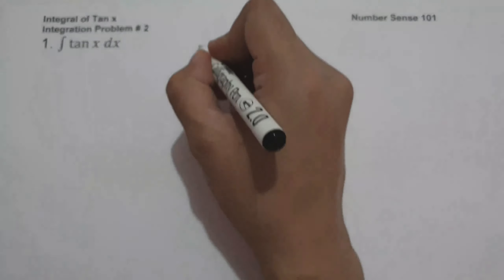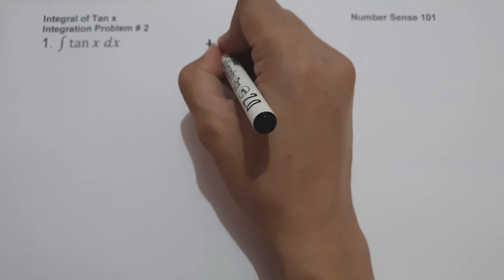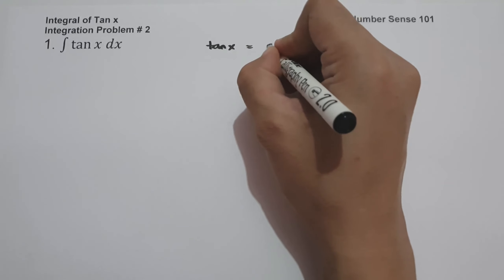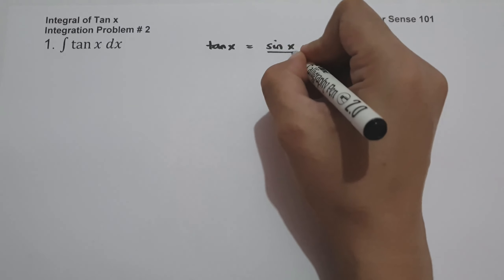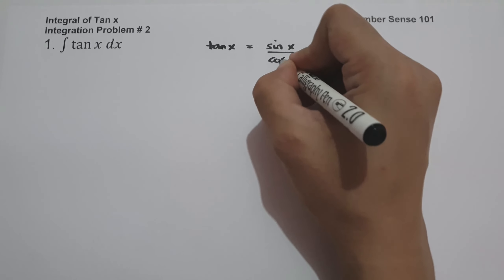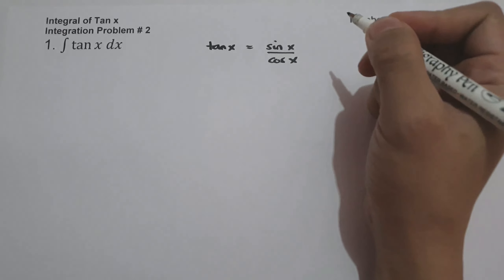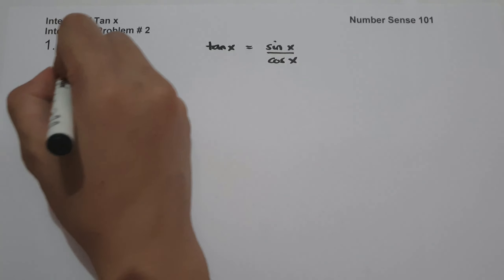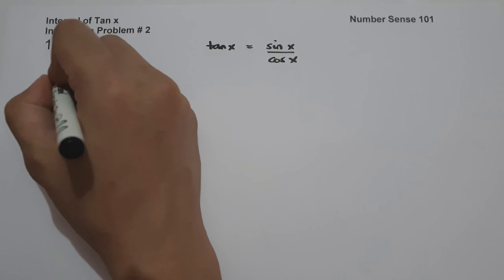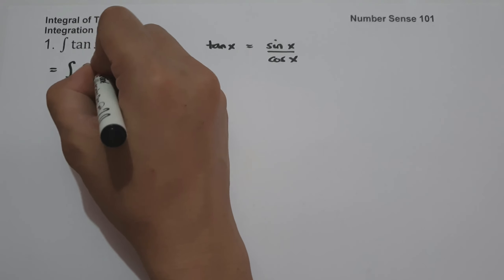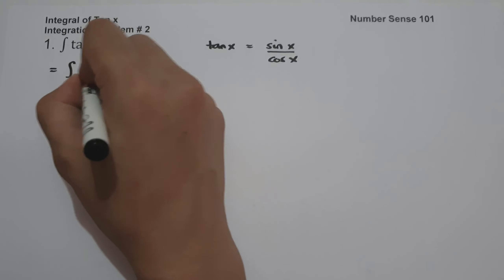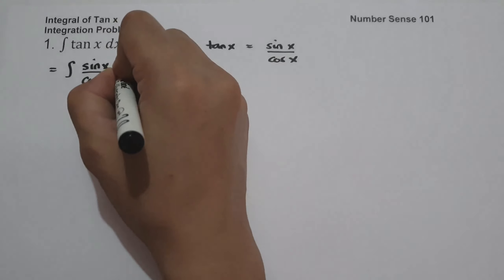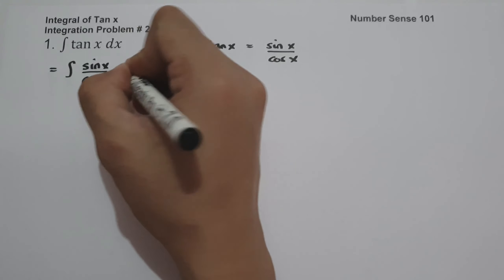We all know that tangent x is equal to sine x over cosine x. So let us rewrite our given as the antiderivative of sine x over cosine x dx.